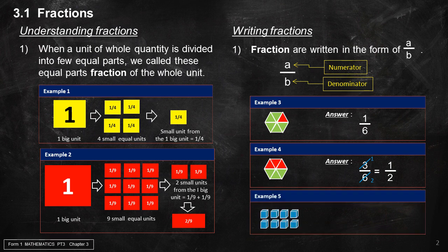Example 5: Fractions can also be used to name a portion of a set of objects or group. In this diagram, there are 8 cubes. 3 cubes of this set of cubes is called 3 over 8.